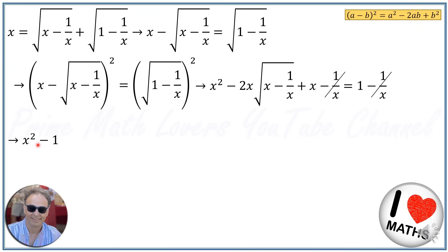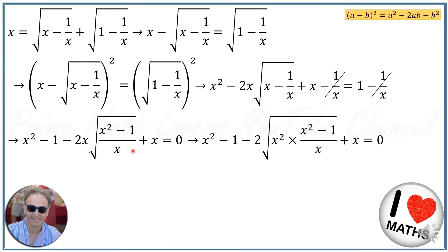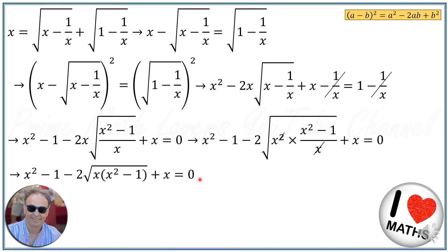Taking 1 to the first side of the equation, we will have x squared minus 1 minus 2x times square root of (x squared minus 1 over x) plus x is equal to 0. In the next step, we take x into the square root, meaning it becomes x squared, so x squared times (x squared minus 1 over x). We can cancel one power of x, giving us x squared minus 1 minus 2 times square root of x times (x squared minus 1) plus x is equal to 0.